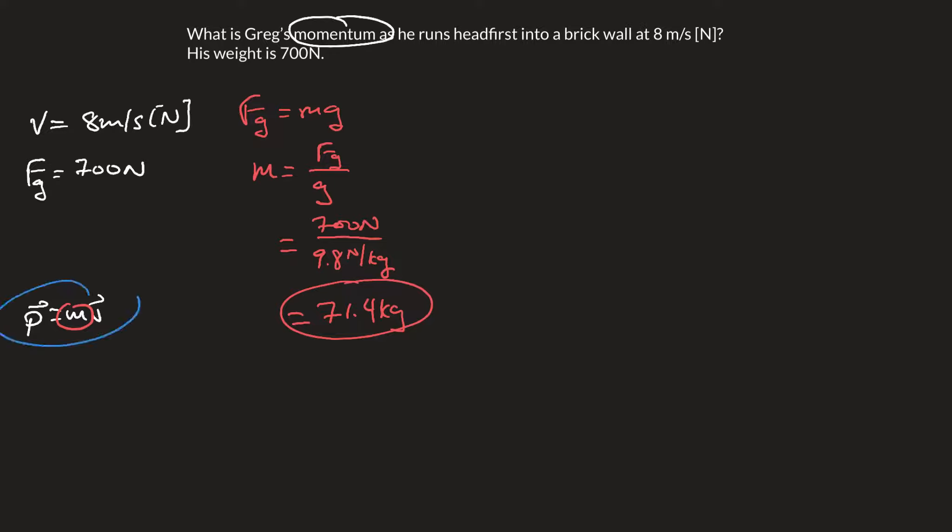We can now use that information to solve for our momentum. Momentum equals mV, which is 71.4 kilograms times the velocity, which is 8, equals 571.2. And the units are kilograms meters per second.